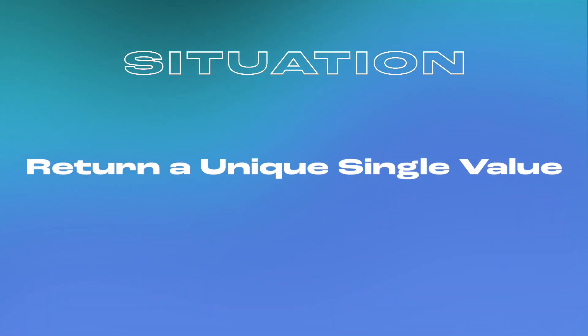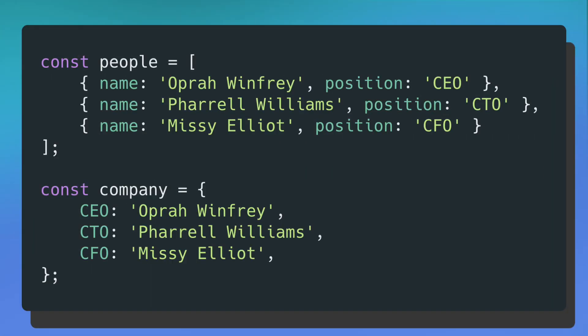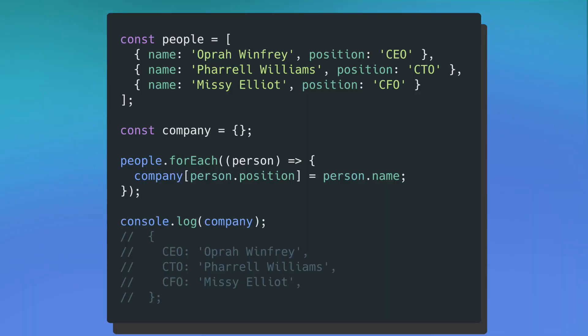The second situation that I find myself in a lot is that after iterating through an entire array, I want to return one single value from that iteration. This is probably the most common situation where new software engineers will fall back on the forEach method. Let's say you want to construct a completely new object from iterating through each element in an array. Specifically, I still have my array people and each person has a name and a position property. I want to create a new object called company where the key is the position title and the value is the name of the person who holds that position.